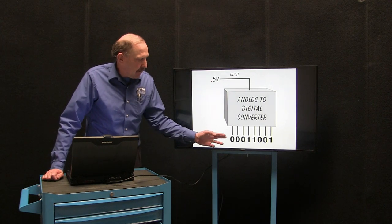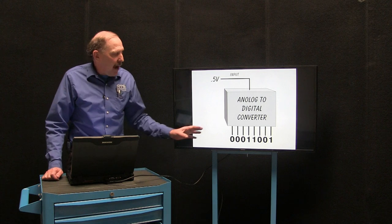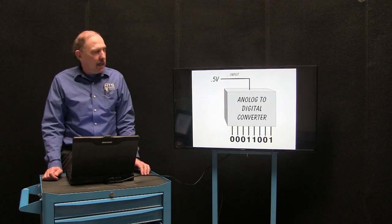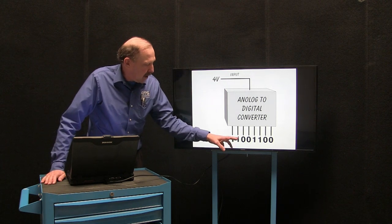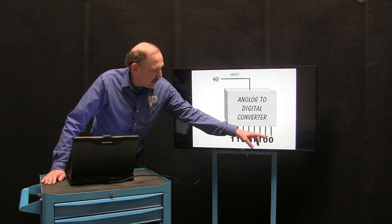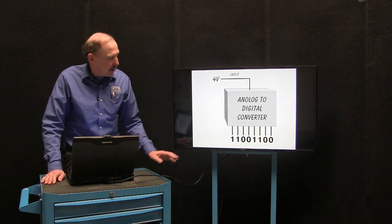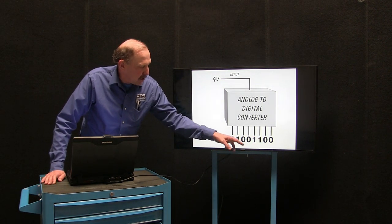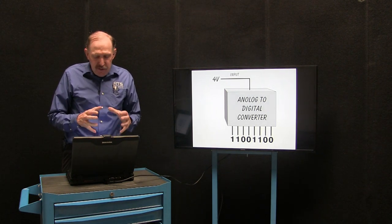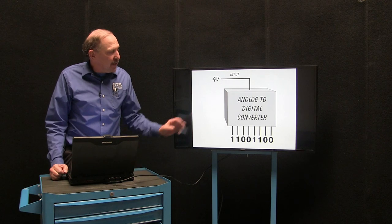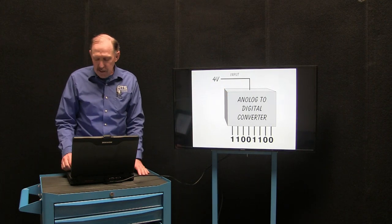For example, if I had 0.5 volts, I would have the binary string 0, 0, 0, 1, 1, 0, 0, 1 — that binary code would indicate 0.5 volts. If I had 4 volts, I would have 1, 1, 0, 0, 1, 1, 0, 0. Note that these are 8-bit ADCs — there are 8 placements where I can change or rearrange ones and zeros. This is going to tell the microprocessor what voltage is coming in from any of the sensors present.